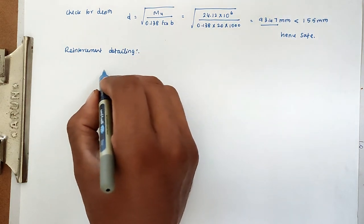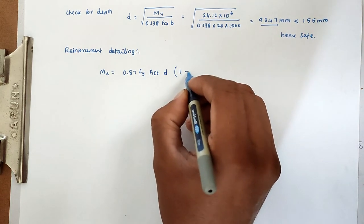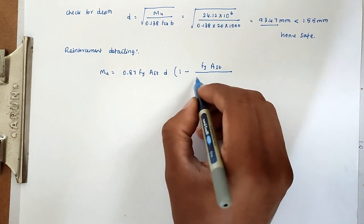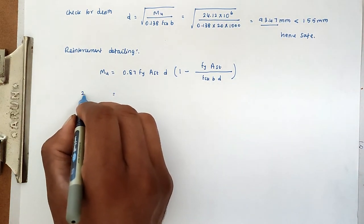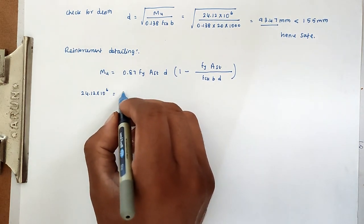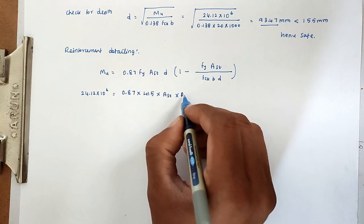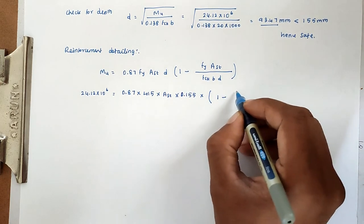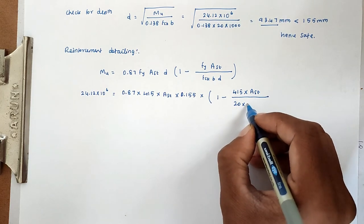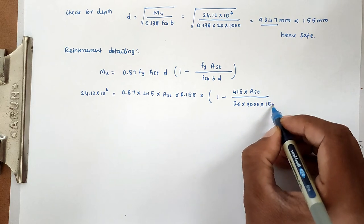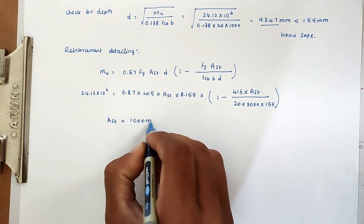For reinforcement detailing, the formula is Mu = 0.87 × fy × Ast × d × (1 − (fy × Ast) / (fck × B × d)). Substituting Mu = 24.12 × 10⁶, fy = 415, fck = 20, B = 1000, d = 155mm, we solve and get Ast = 1000 mm².